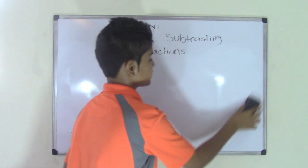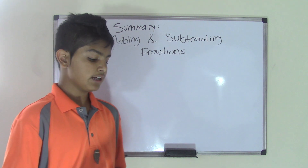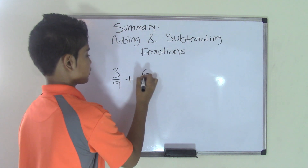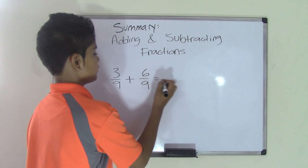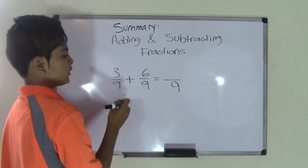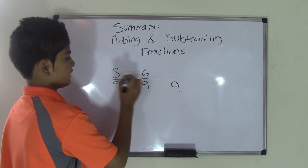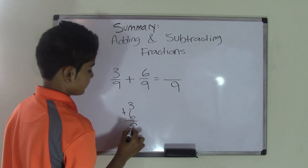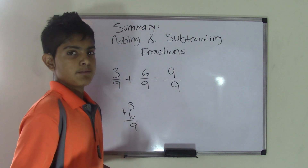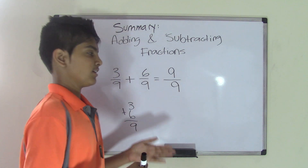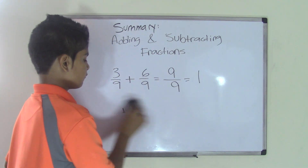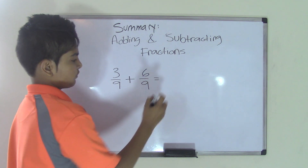Now we'll cover adding and subtracting fractions with common denominators. First, let's do adding. For example, we have three over nine plus six over nine. The first thing to know is that you do not add the denominators — since they're the same, you just write the same denominator. You do add the numerators: three plus six is nine. So we have nine over nine. We can simplify this because nine over nine means all nine parts are filled, which is a whole — so the answer simplifies to one.